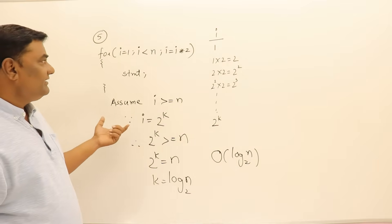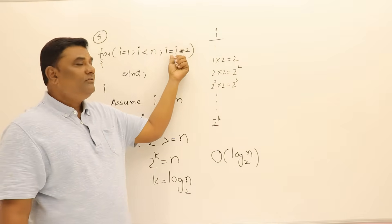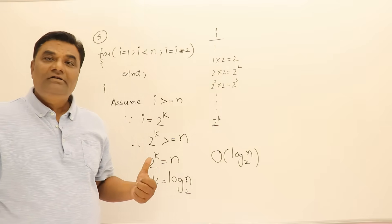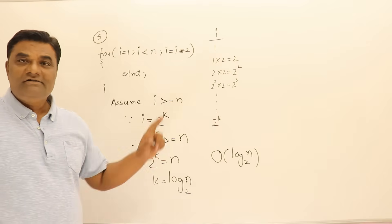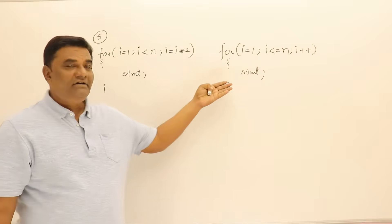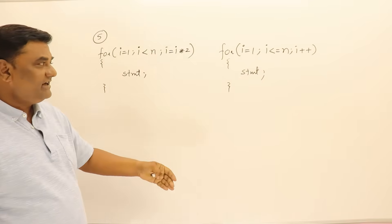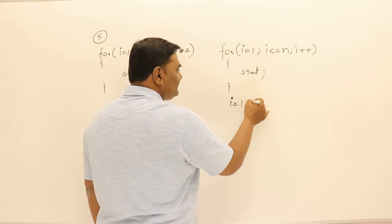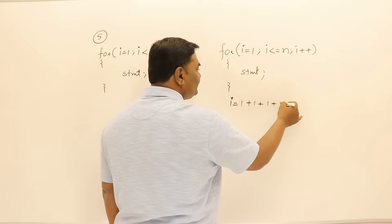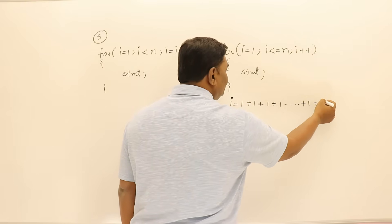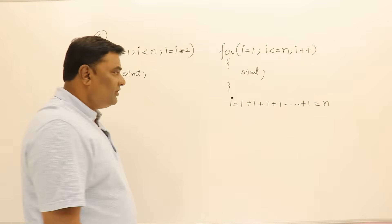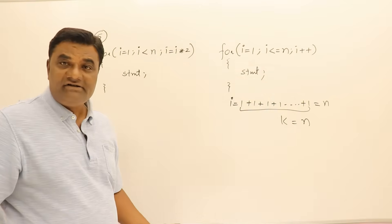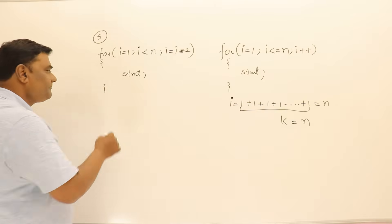We can observe that if a loop's counter variable is not incrementing but is getting multiplied by something — say 2 or 3 — then it will take log base 2 time. Now consider the regular incremental for loop: i starts at 1 and increments by 1 each time, stopping when it exceeds n. It gets added k times, and that equals n, so k equals n.